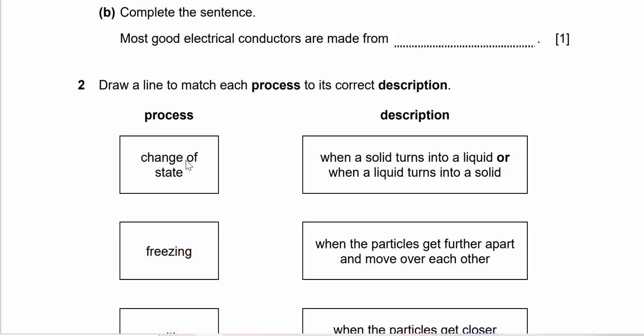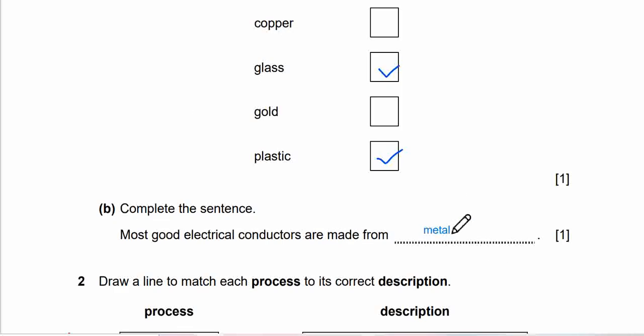Let's move on to 1b. Question 1b says, complete the sentence. Most good electrical conductors are made from? I believe you know the answer guys. Let's check it out. Of course, it's metal.